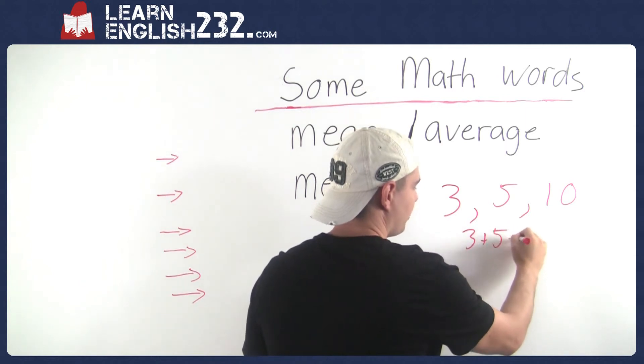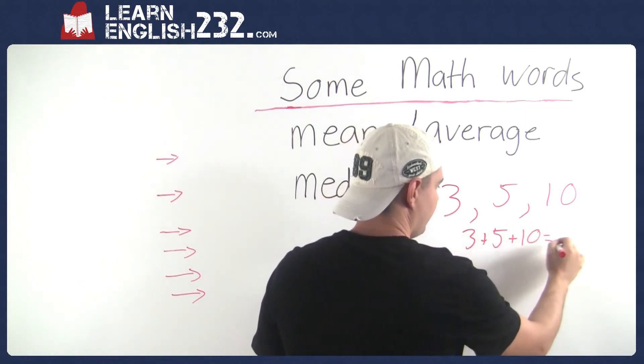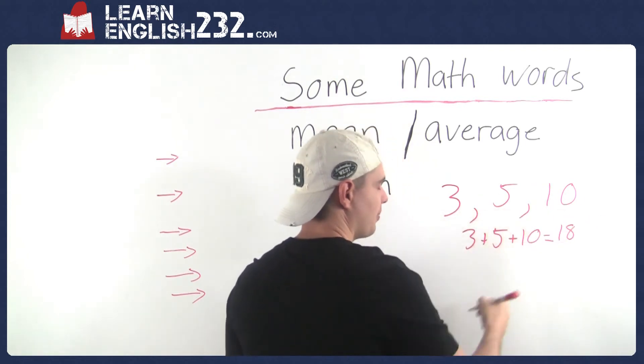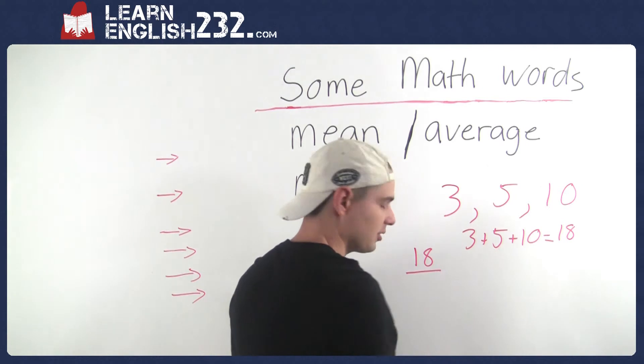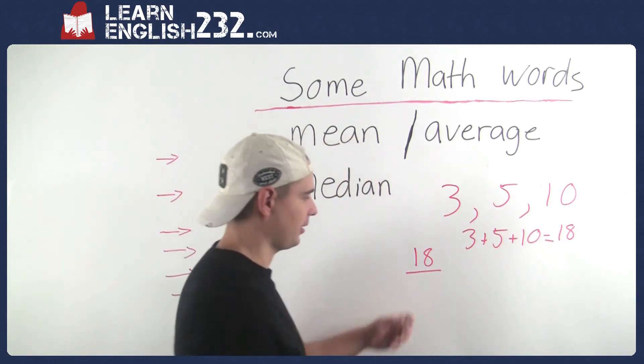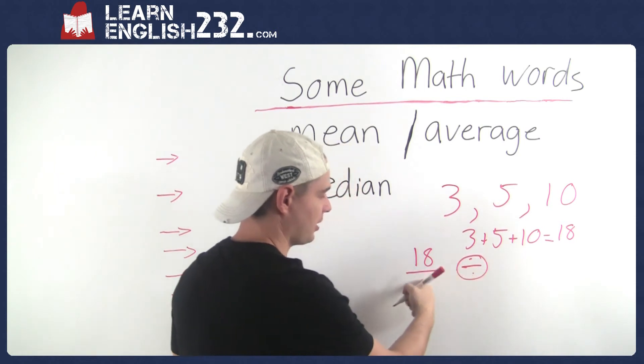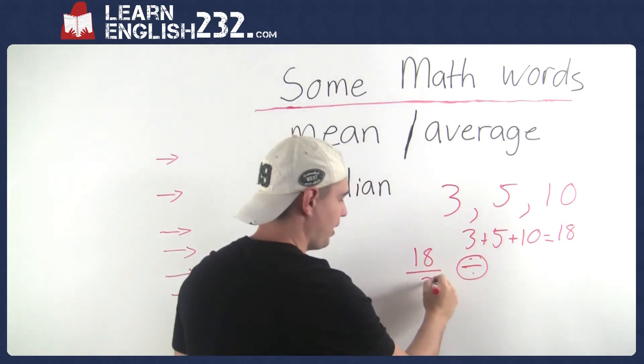And there's three of them, there's three numbers, so you divide it. This means divide, this number here. So it's this symbol, that's divide. That means the same thing here, divided by three, because there's three.